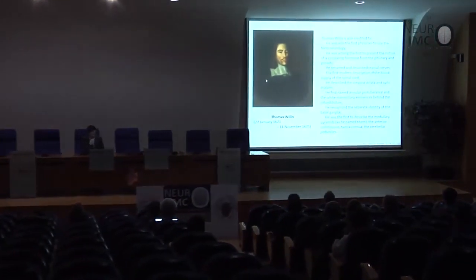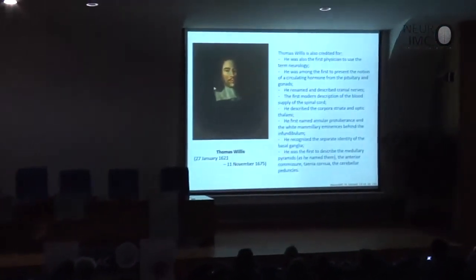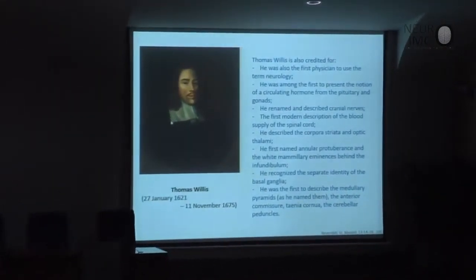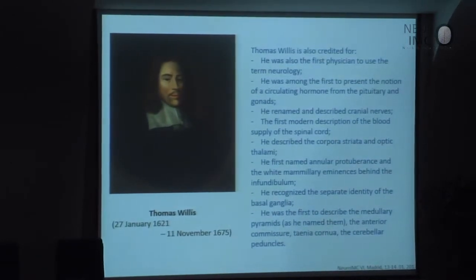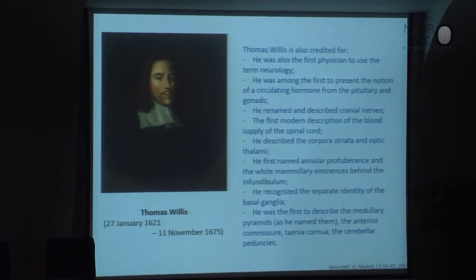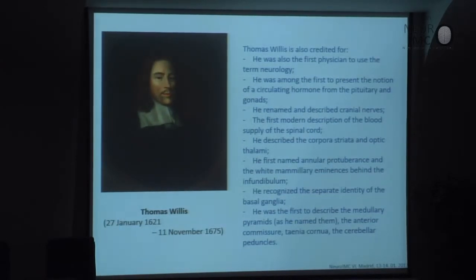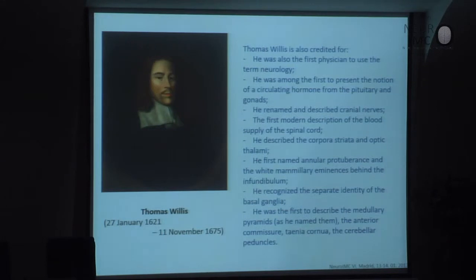During his scientific work, he was credited to be one of the first physicians to use the term neurology. He was among the first to present the notion of a circulating hormone from the pituitary gland. He renamed and described the cranial nerves — and actually we are still using something very close to his description. He made the first modern description of the blood supply of the spinal cord, described the corpus striata and optic thalami, named the annular protuberance and white mammillary eminence behind the infundibulum, recognized the separate identity of the basal ganglia, and was the first to describe the medullary pyramids.